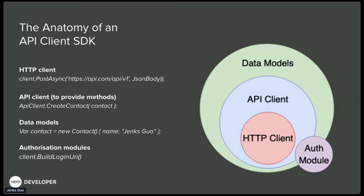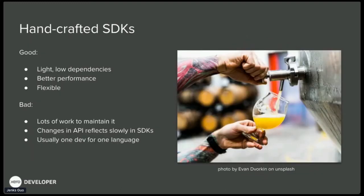The authorization module is a part that can live inside or outside of your API client. In most API platforms you have some security measure in place, so developers need to interface with your authentication and authorization framework — for example, OAuth 1 or OAuth 2. You don't want them to reinvent the wheel. What if you give them a way to easily interact with your authentication framework, so it's as easy as configuring a client ID and secret and calling client.buildLoginUrl() — which is often the first step of OAuth 2 authentication for third-party software to get authorization from the user to act on their behalf.